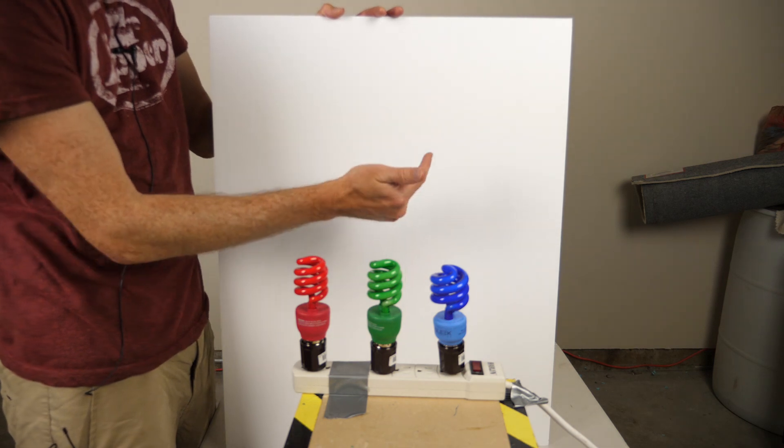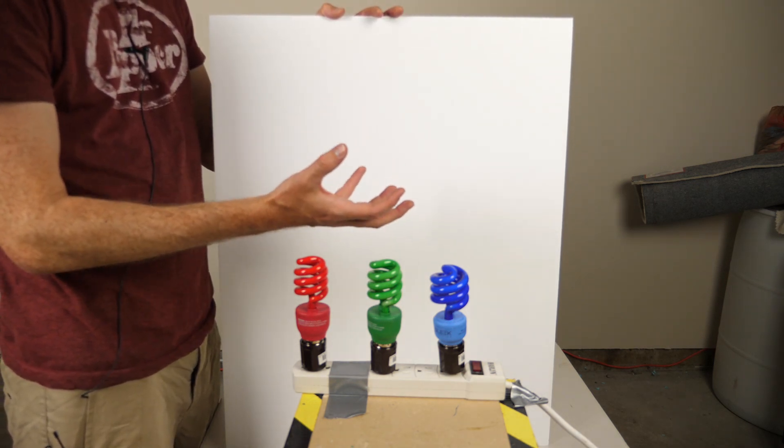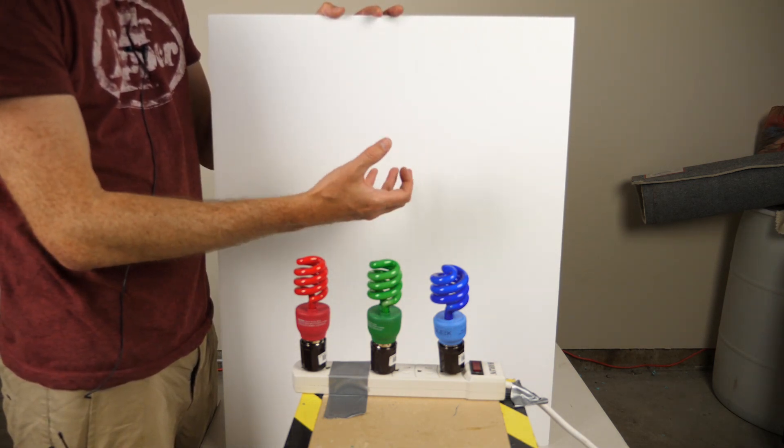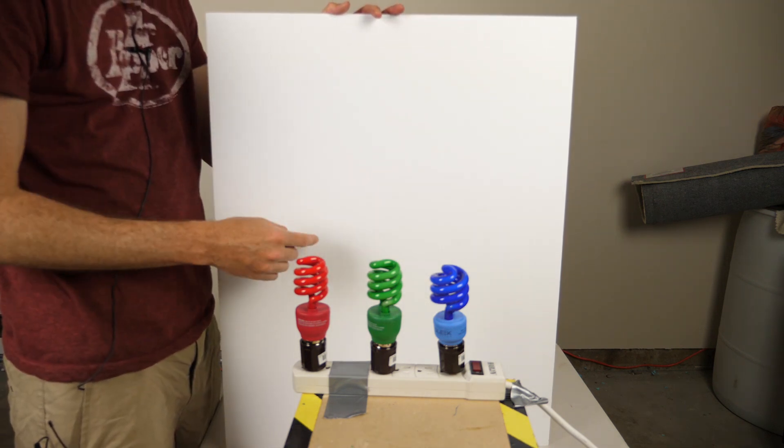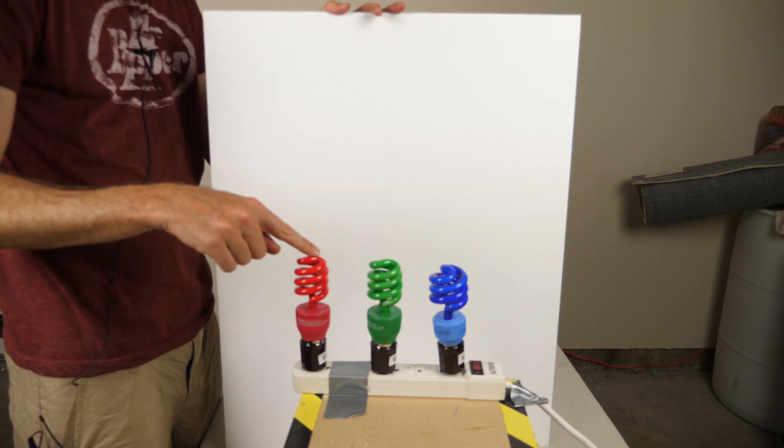So for example, this poster board looks white, but white is actually not a color. White light is actually just a combination of all of the other colors of light. And all you really need to make white light is just blue light, green light, and red light.